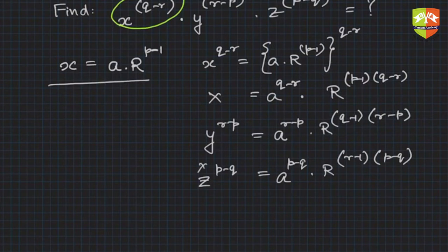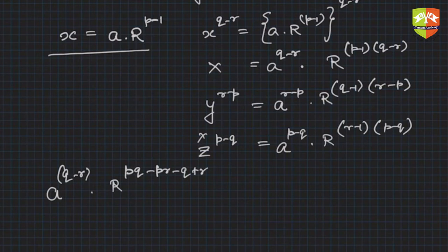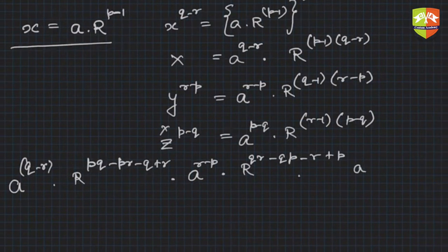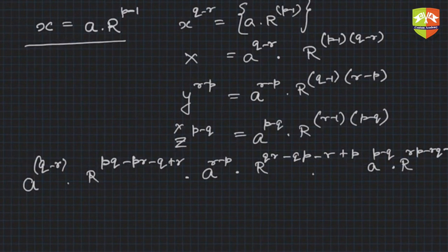Now you have to multiply these three on the LHS. If you multiply what will you get? You will get a to the power (q minus r) times R and expand the brackets simultaneously: pq minus pr minus q plus r, into a to the power (r minus p) into R times (qr minus qp minus r squared plus rp), into a to the power (p minus q) into R times (rp minus rq minus p squared plus q).